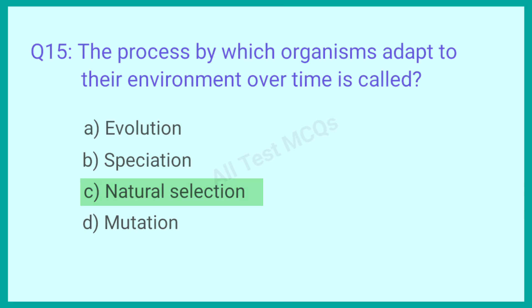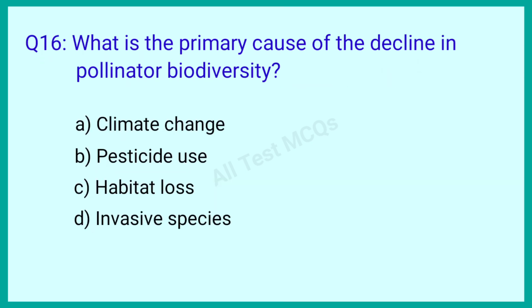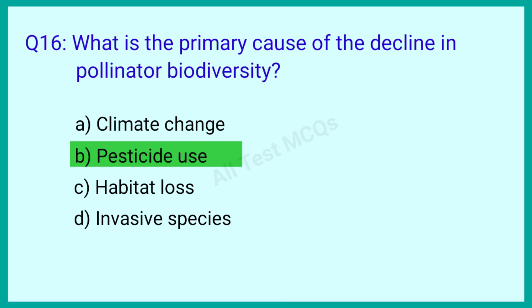Question number 16: What is the primary cause of the decline in pollinator biodiversity? The correct answer is option B: Pesticide use.